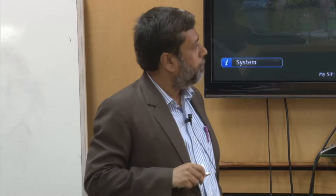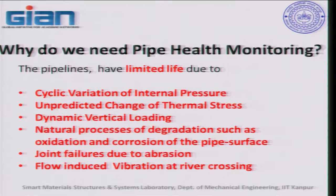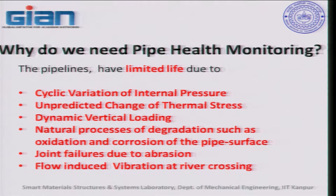Still, there are oxidation and corrosion issues not so much from outside conditions, but because of the inside conditions — the type of fluid the pipeline is carrying can create various types of oxidation and corrosion of the pipe surface. There is also the problem of joint failure due to abrasion. Even though gas pipelines are supposed to carry only natural gas, there will always be pollutants in it, and these pollutants, particularly at the bends, create joint failures due to abrasion.